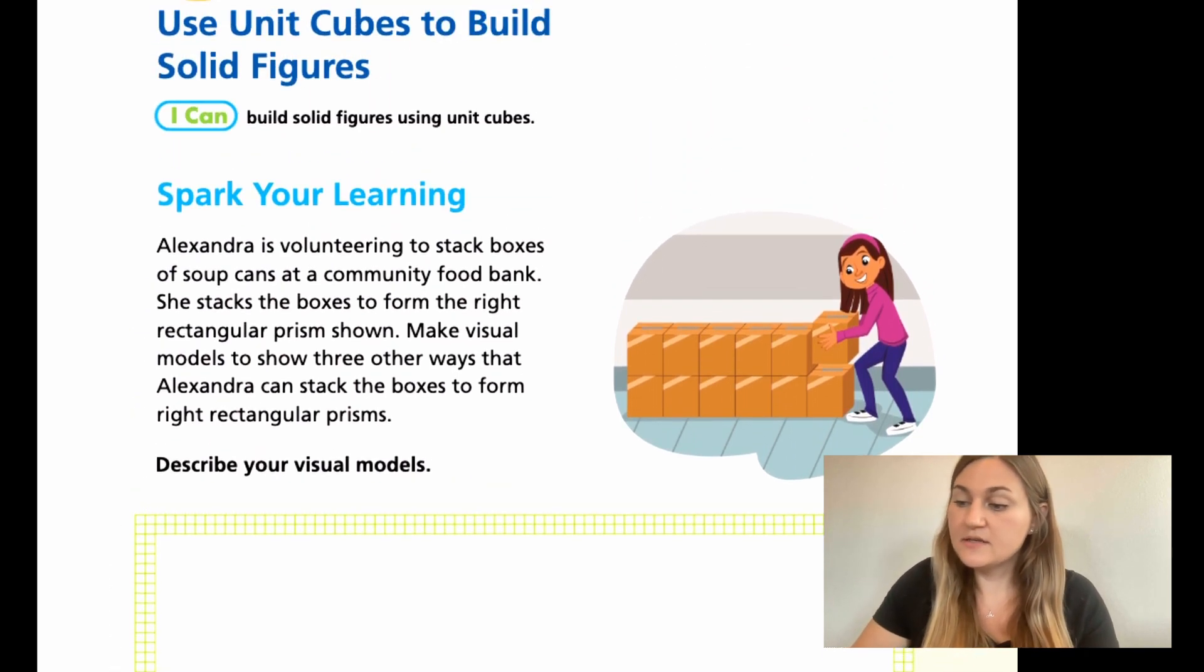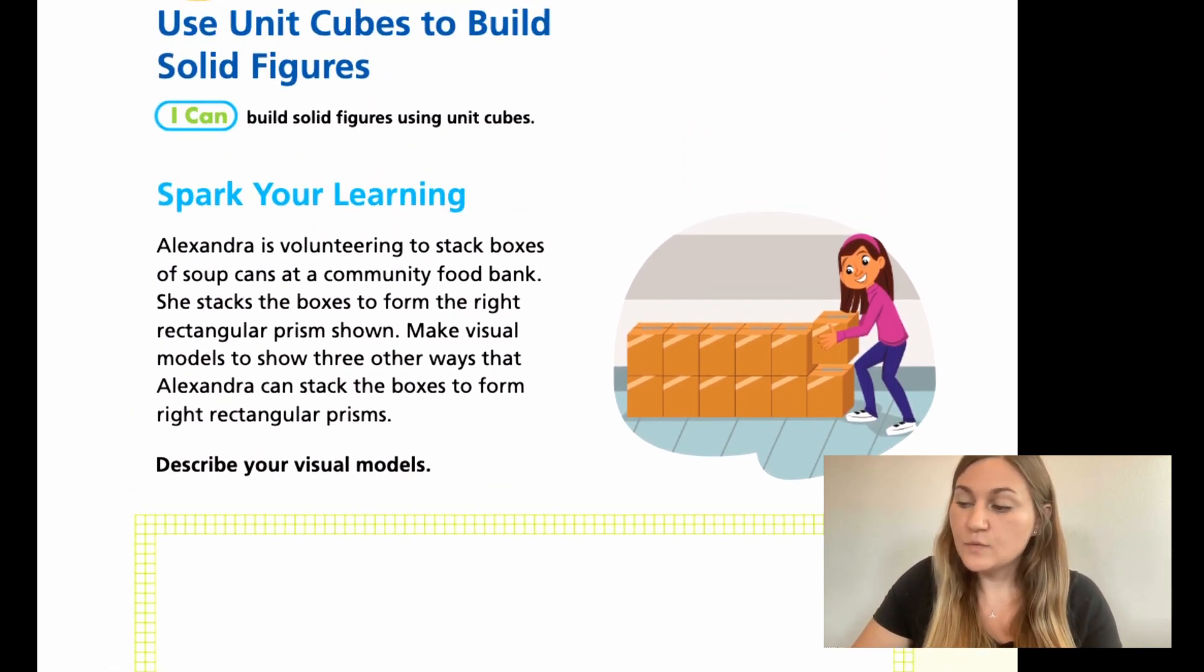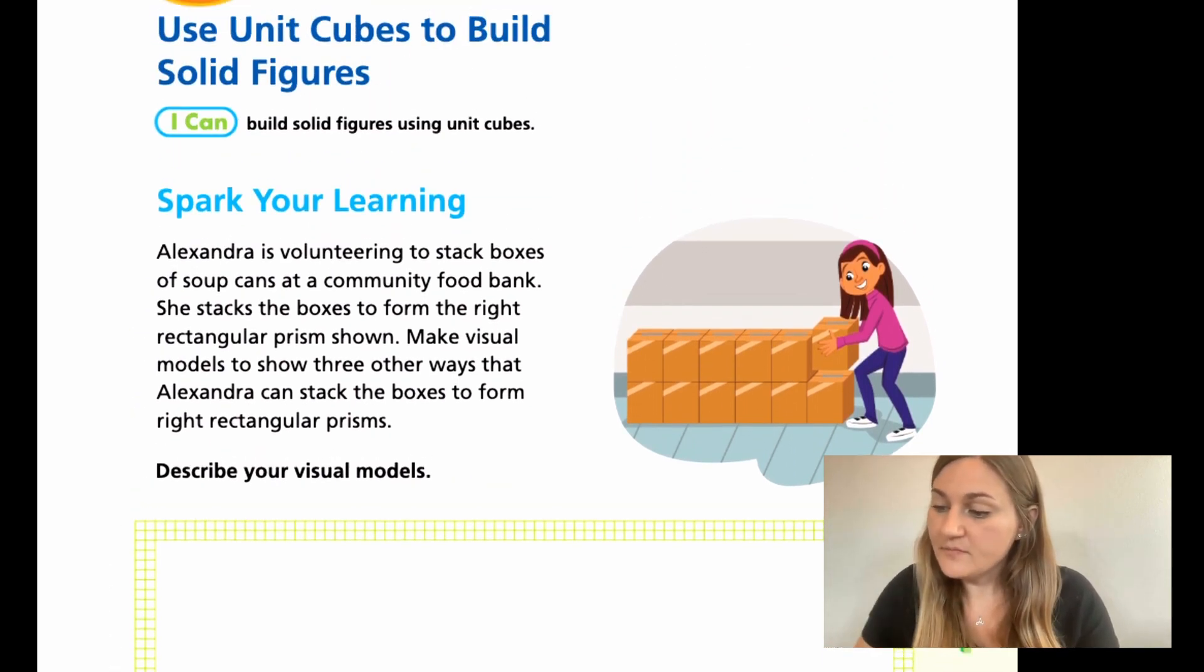So moving on to the spark your learning. There's a word problem that says, Alexandra is volunteering to stack boxes of soup cans at a community food bank. She stacks the boxes to form the right rectangular prism shown. Make visual models to show three other ways that Alexandra can stack the boxes to form right rectangular prisms.